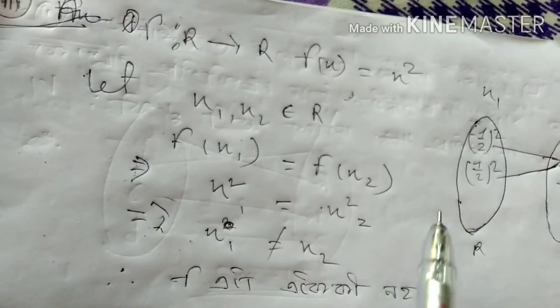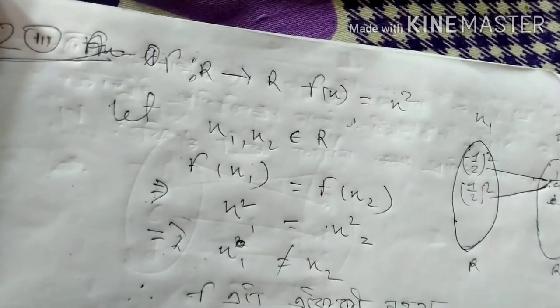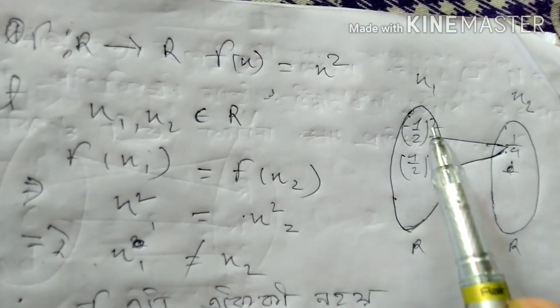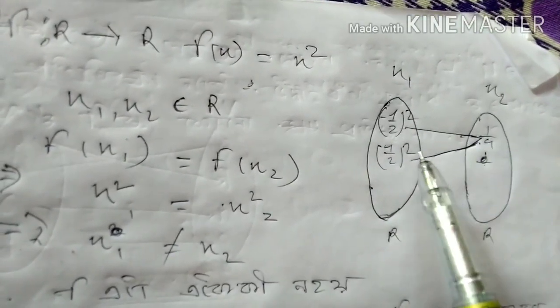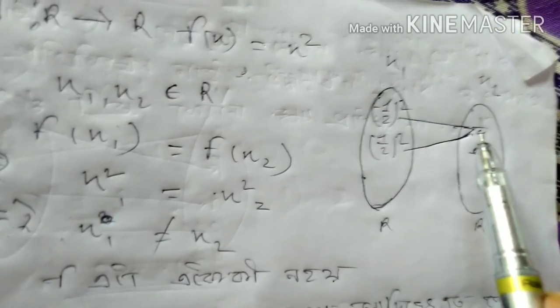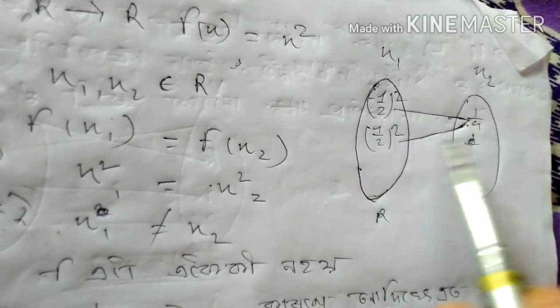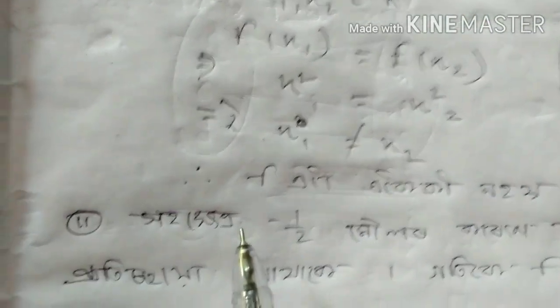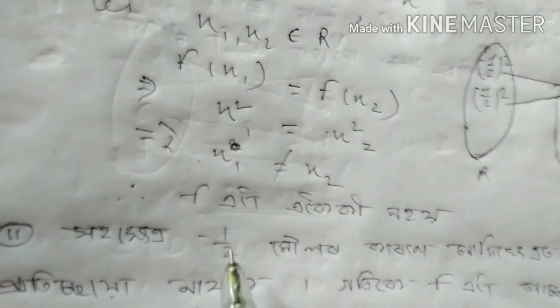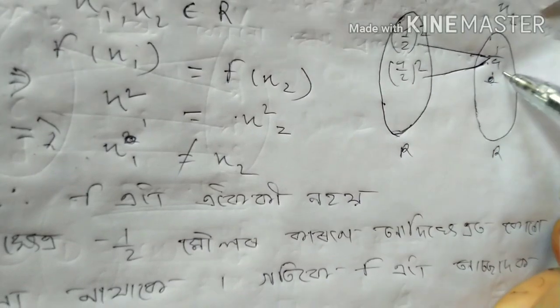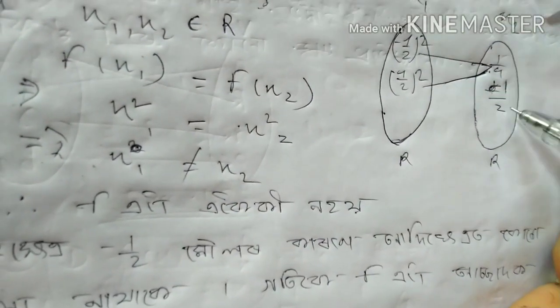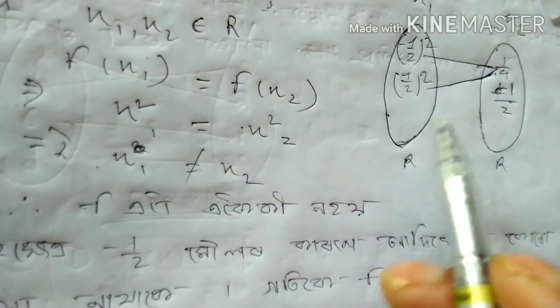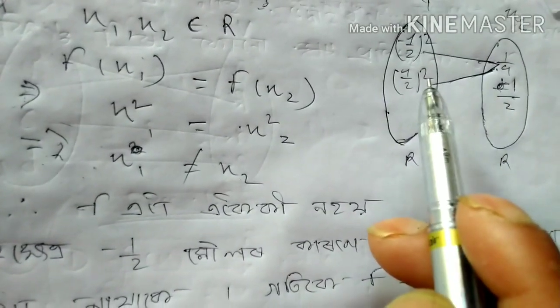It will cancel the sum of x2. It will be the original number of x2. x2 is equal to x2. So it will cancel the sum of x2, giving minus 1 by 2.